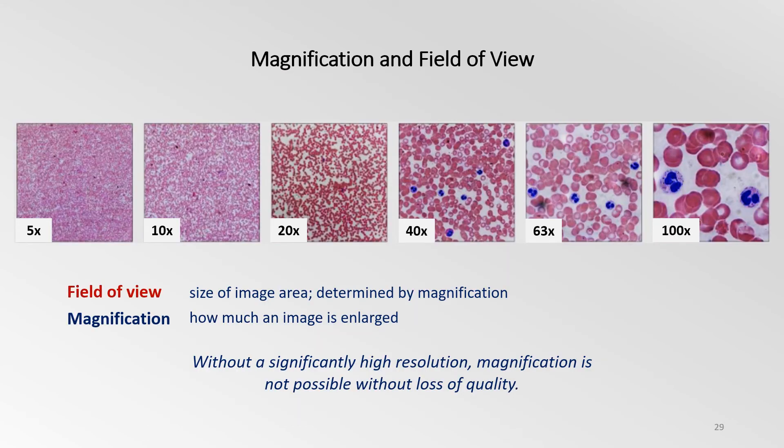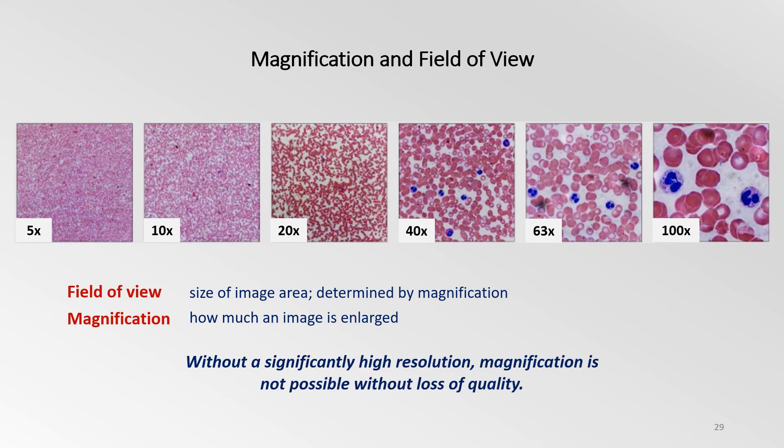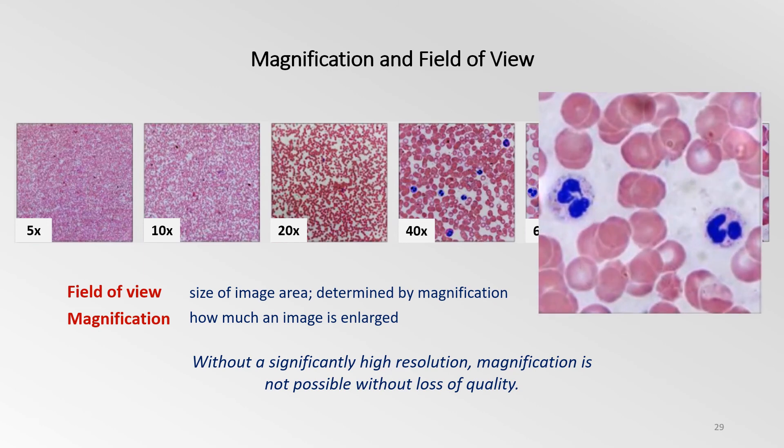The field of view is the area of the object that is imaged by a microscope system. The size of the field of view is determined by the objective magnification. In optical microscopy, resolution is somewhat a subjective value because at high magnification, an image may appear unsharp but still be resolved to the maximum ability of the objective.